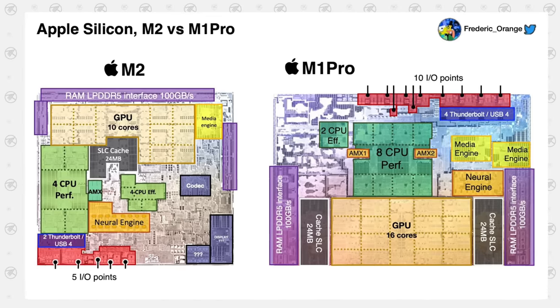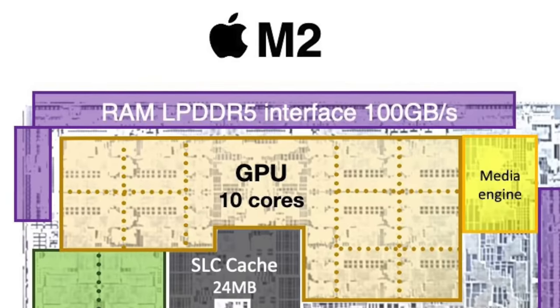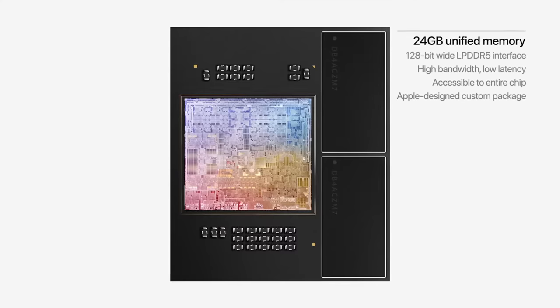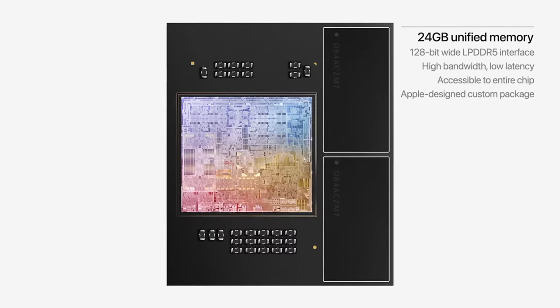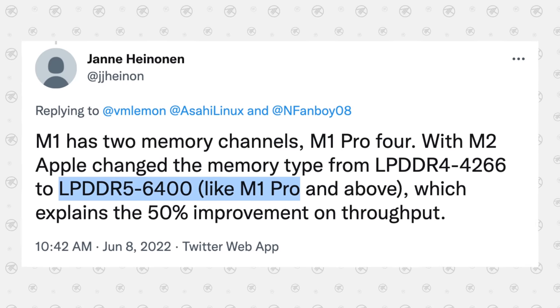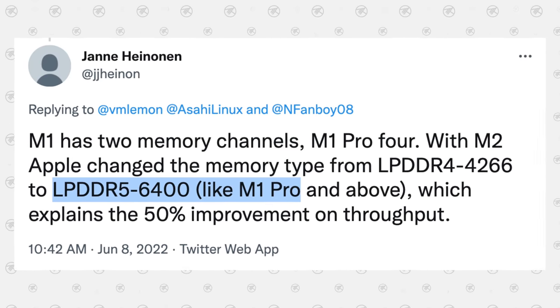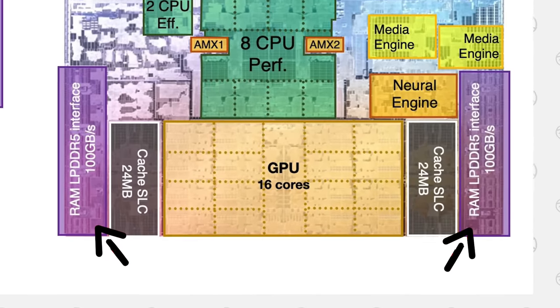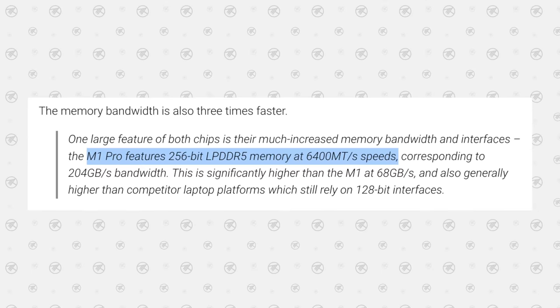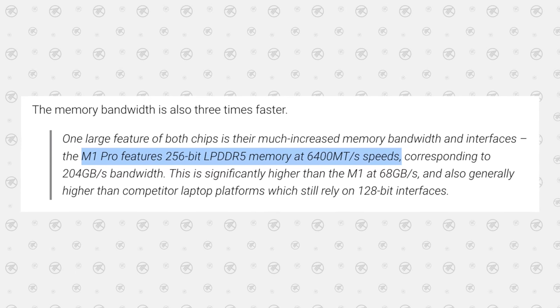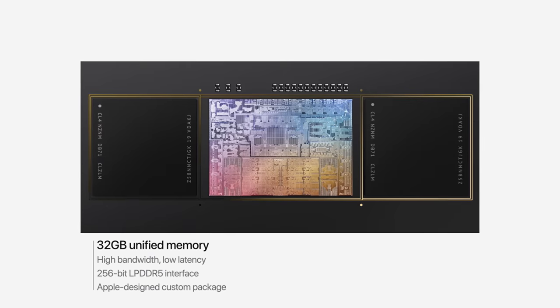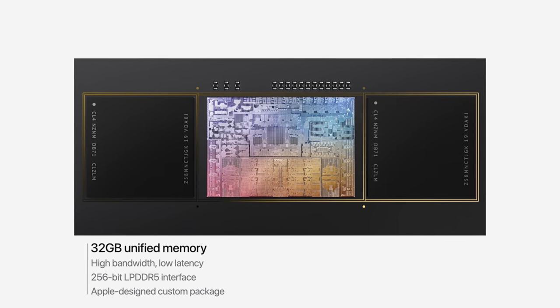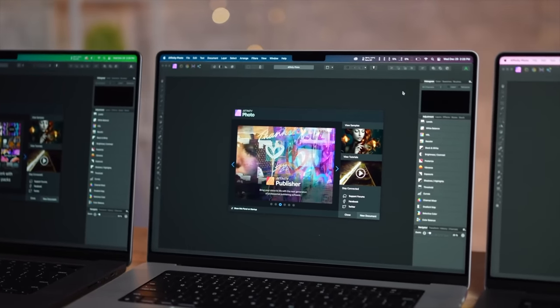First up, the RAM interface on the M2 supports up to 100GB per second memory bandwidth, connecting two chips of LPDDR5 RAM running at 6400MHz — which is pretty expensive and honestly unexpected from Apple. The M1 Pro essentially gets two of those identical interfaces with identical RAM speed, giving it a wider 256-bit memory bus allowing more memory traffic, which means apps that really rely on RAM, like photo editing, will be faster on the M1 Pro.